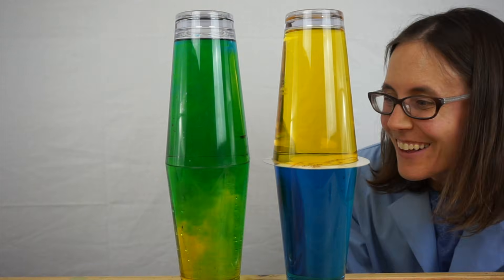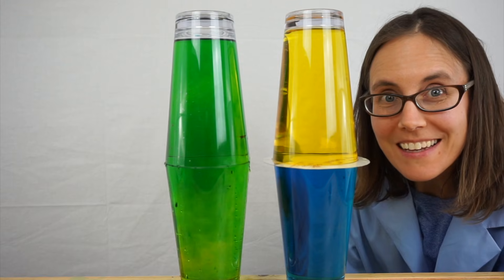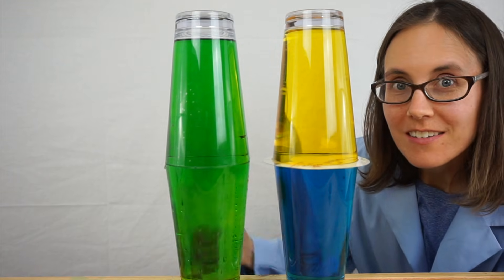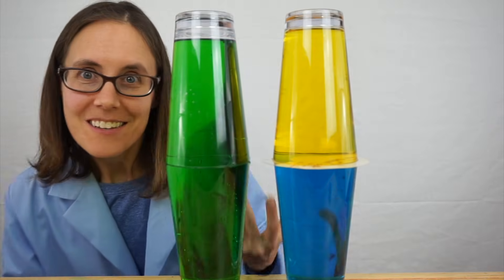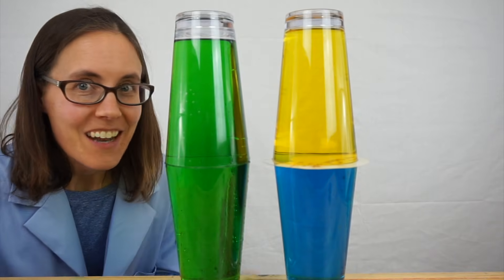And look at that. The water mixes almost immediately. The blue water is more dense, and so it falls down. The yellow water is less dense, and so they mix to make green. Now let's try the other cups.